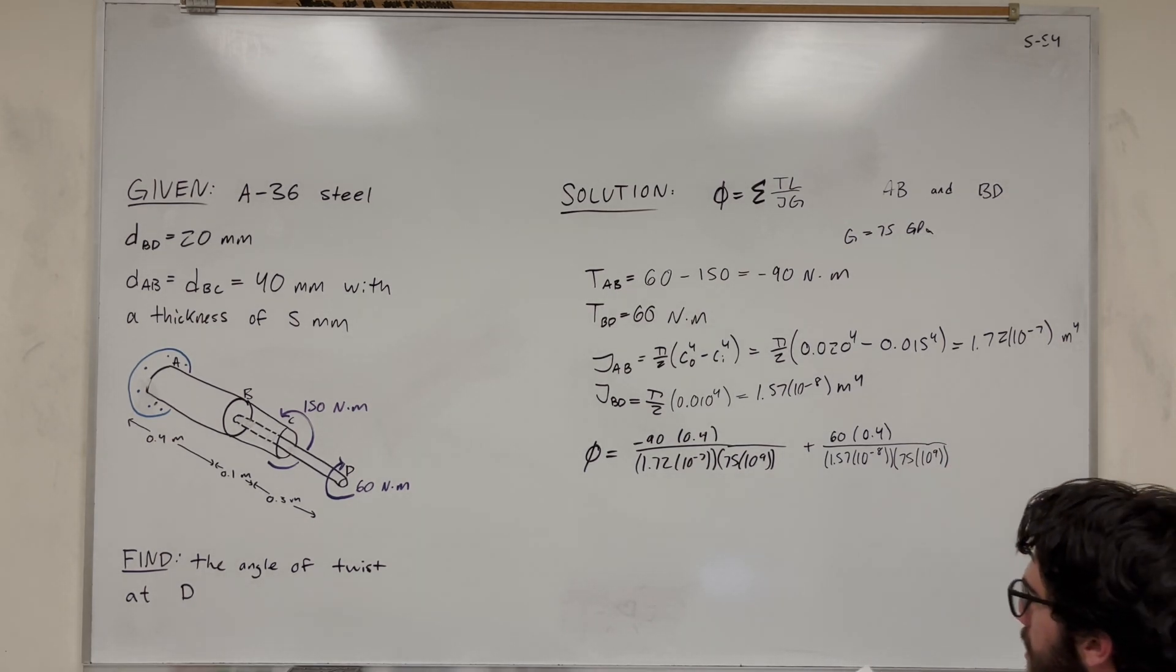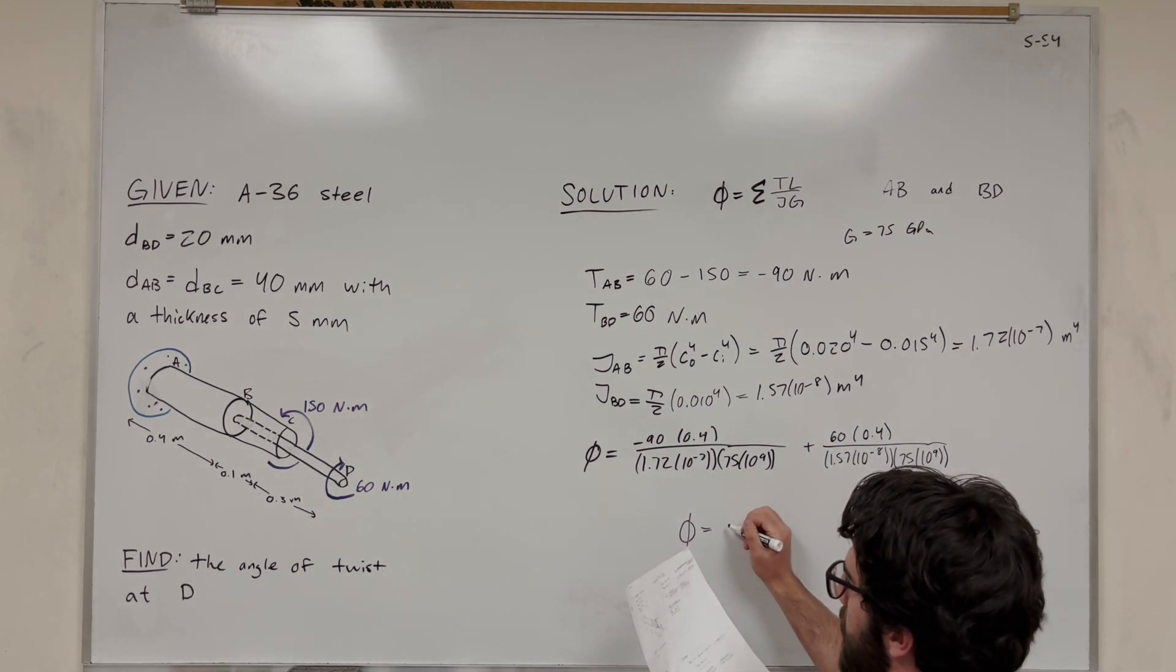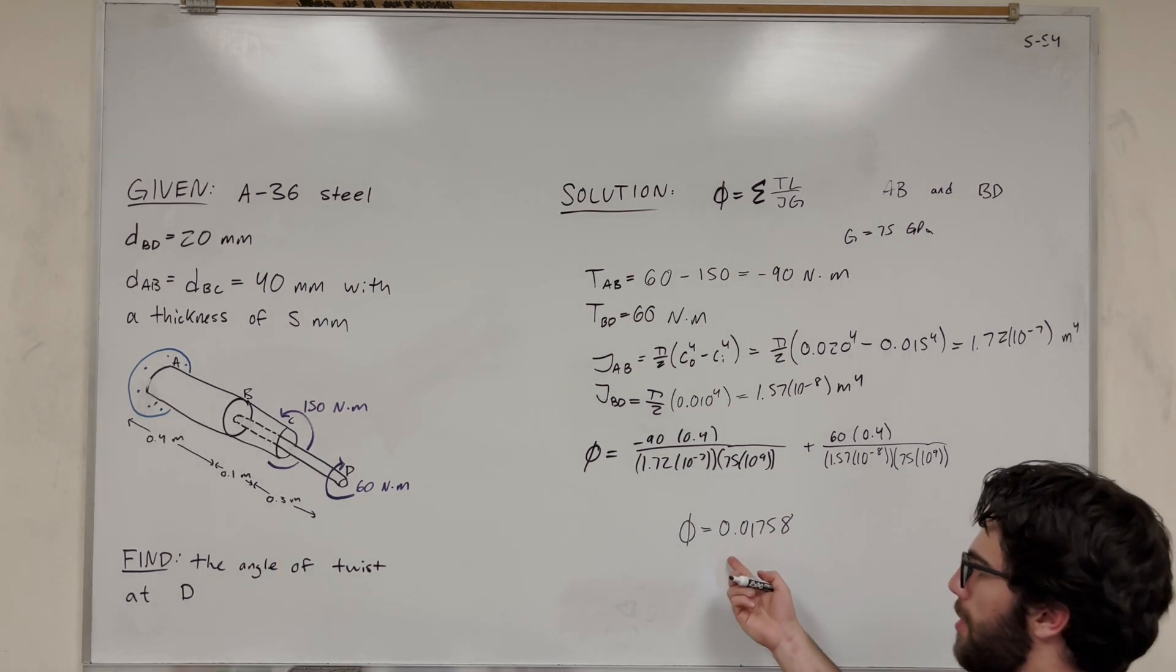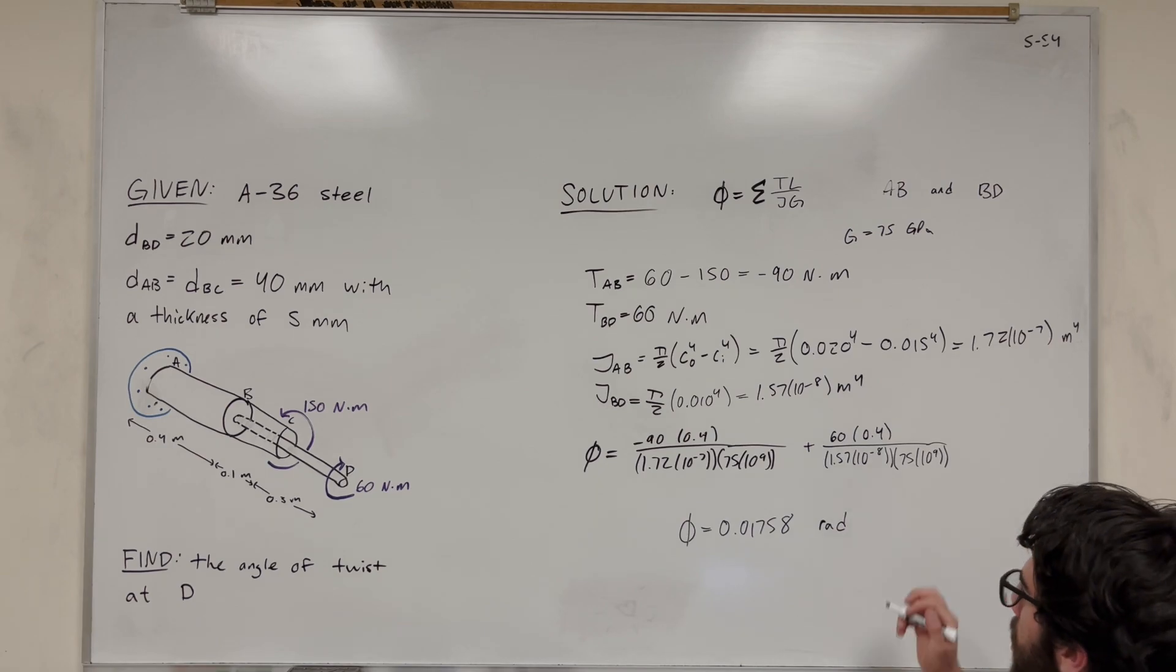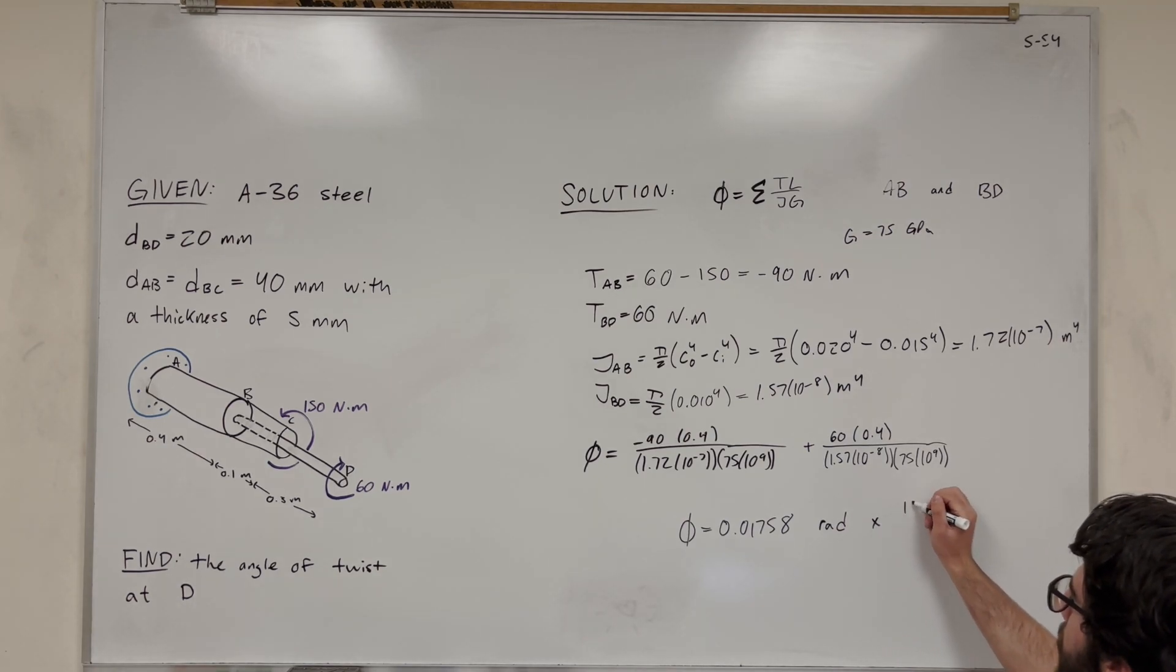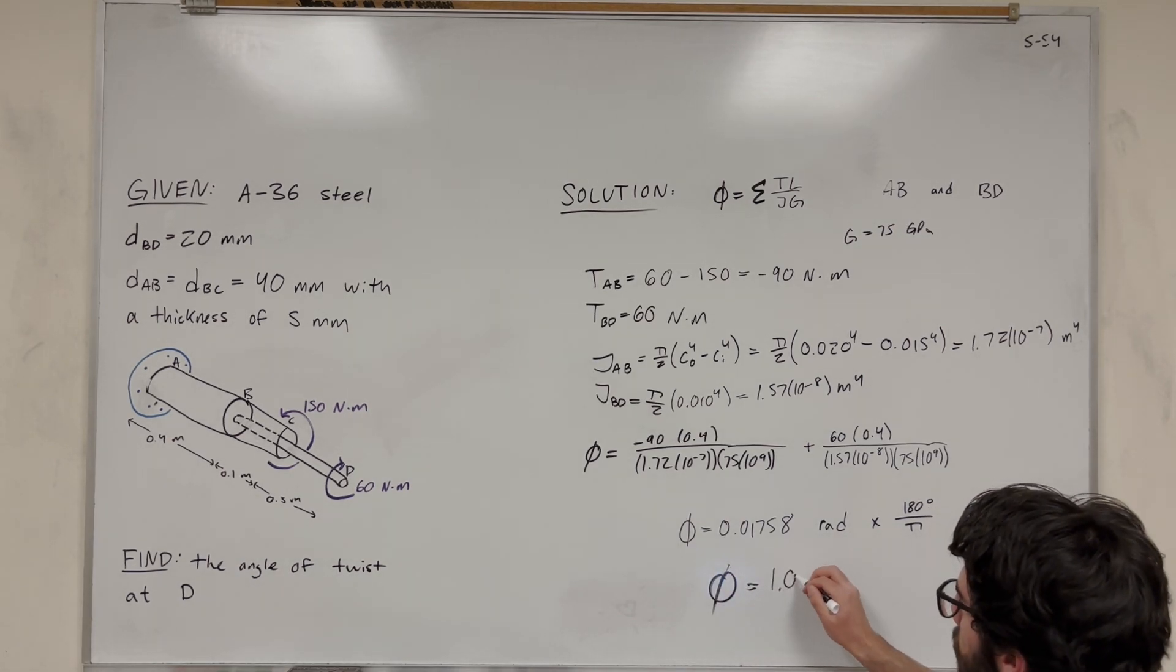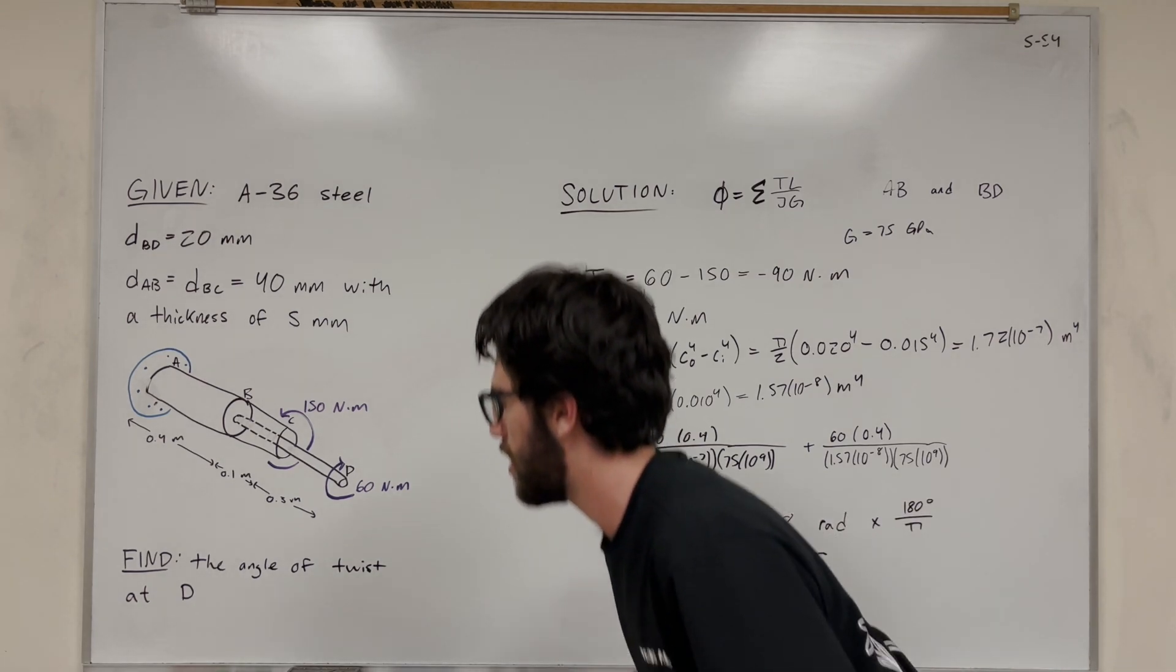Okay, so then we did all of this, and all we've got to do is put it in the calculator. And you're going to find that that is equal to 0.01758. But when you get this number, this is going to be in radians. And the book wants it in degrees. So if you want to convert to degrees, we're going to multiply by 180 degrees over pi. And you're going to do that, and you're going to find that this is 1.01 degrees. And that's our final answer for the angle of twist.